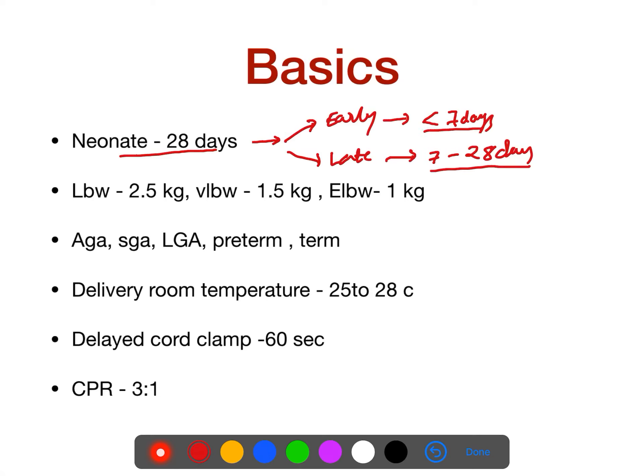Based on weight, we classify as follows: Low birth weight is less than 2.5 kg. Very low birth weight is less than 1.5 kg. And extremely low birth weight is less than 1 kg.